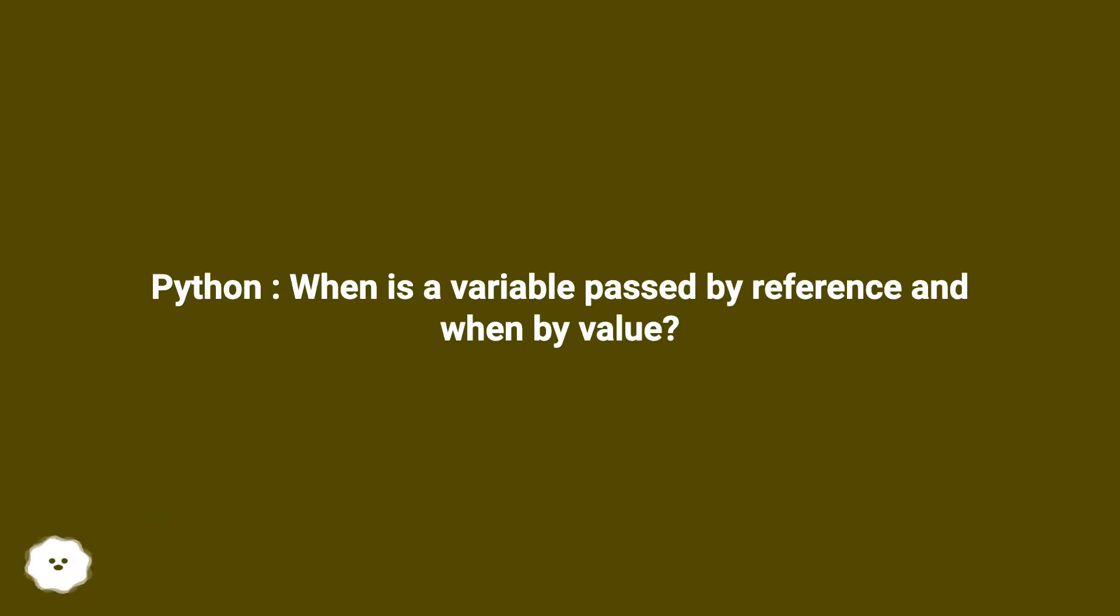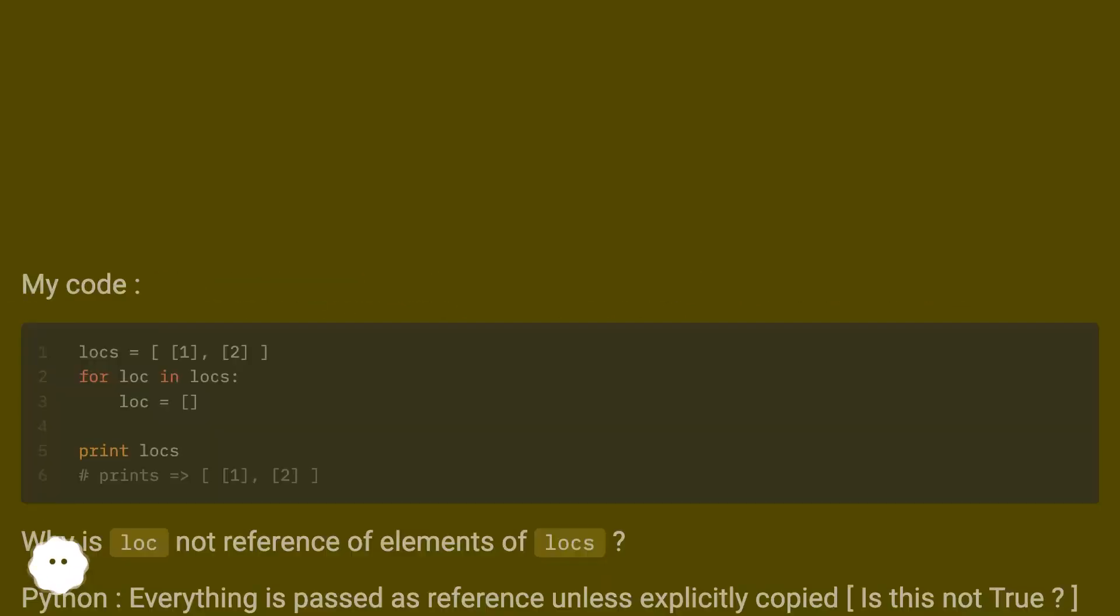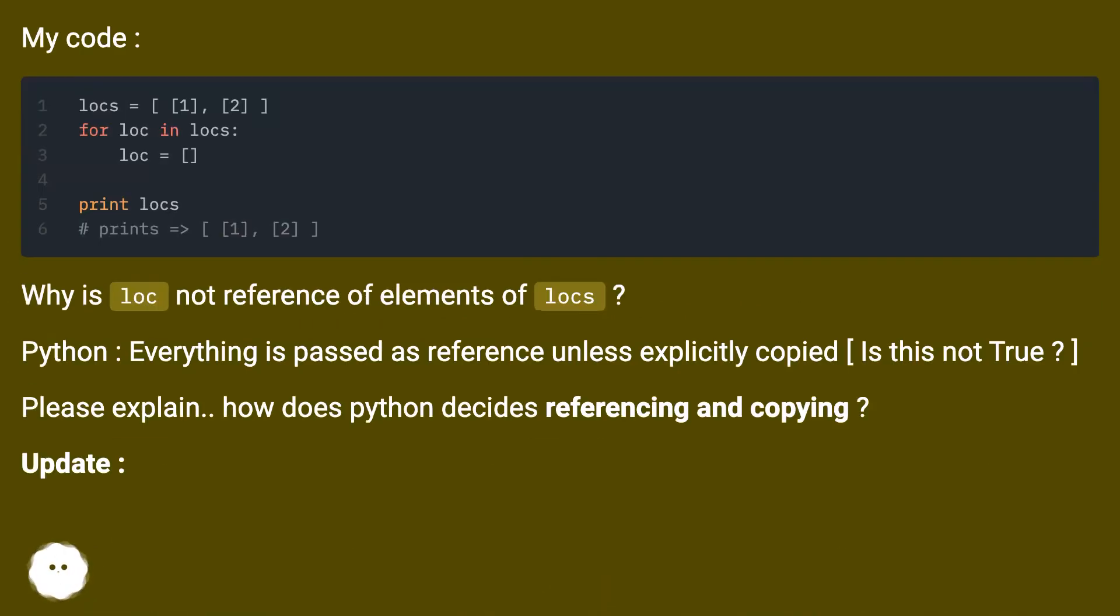When is a variable passed by reference and when by value? My code. Why is loc not reference of elements of locks?